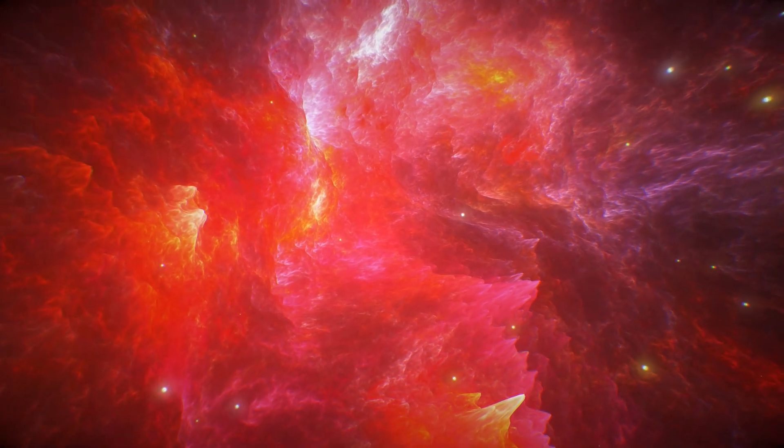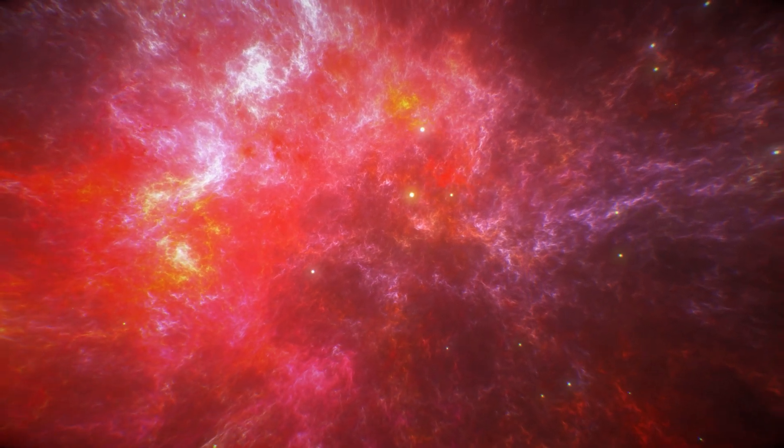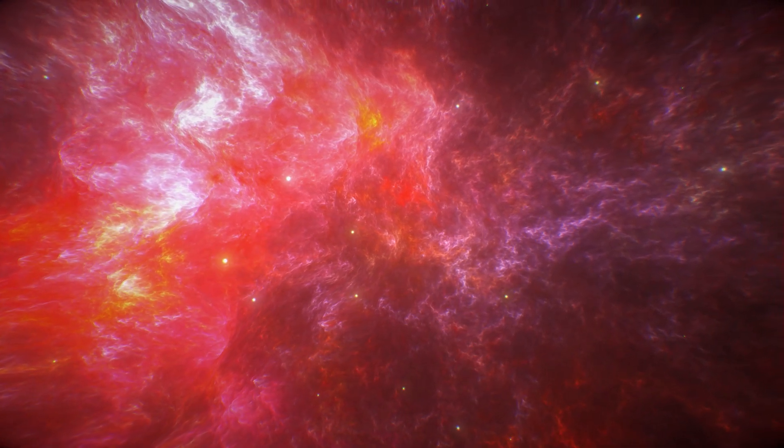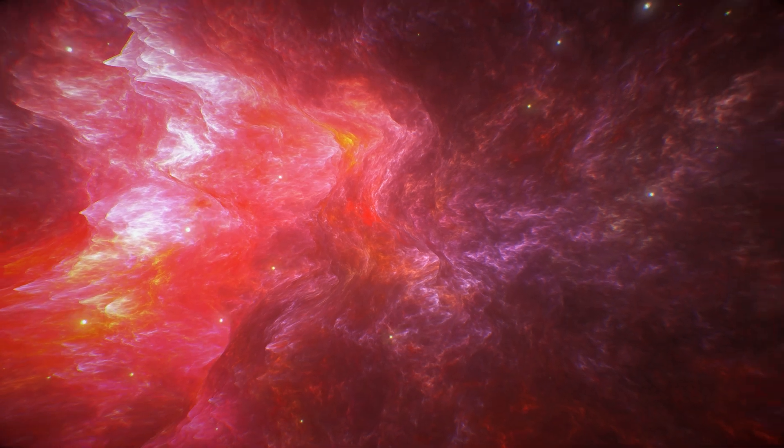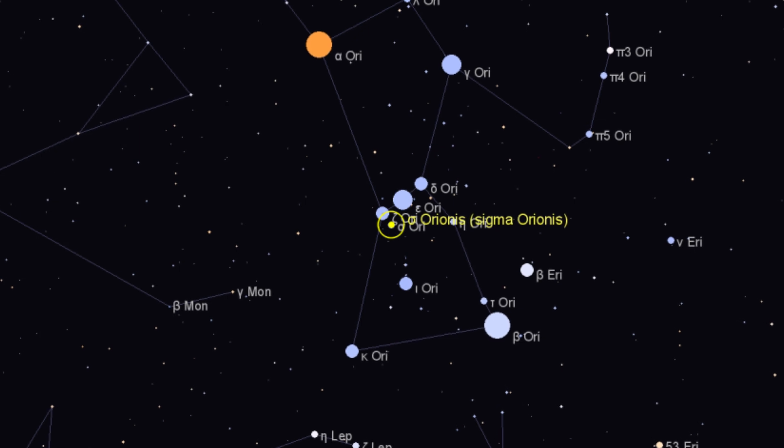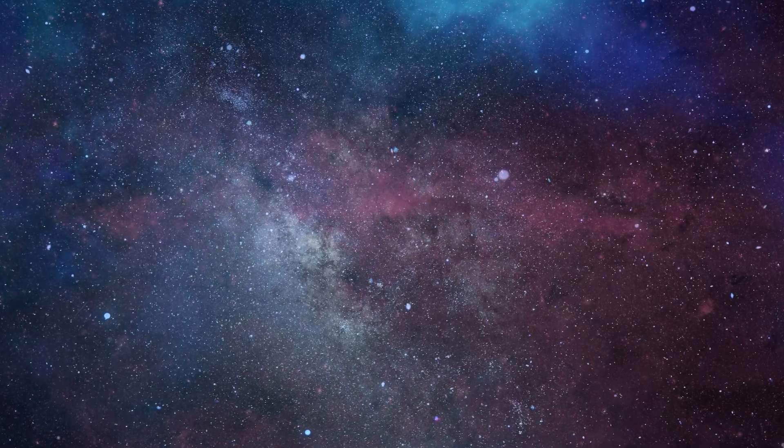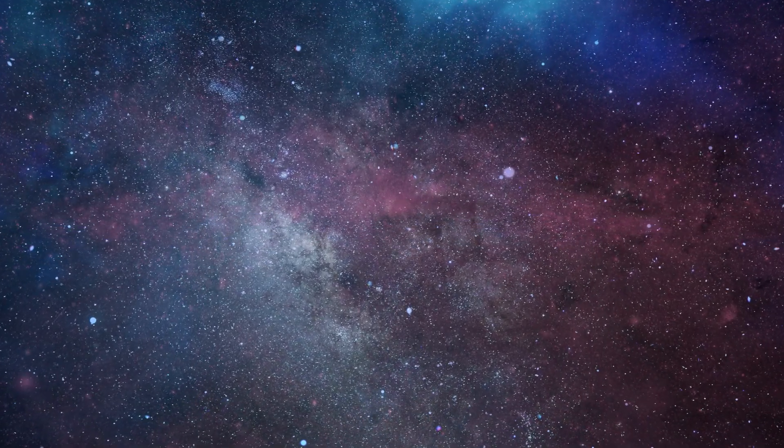The telescope's imaging prowess is further showcased in the stunning capture of the Horsehead Nebula, approximately 1,375 light-years away. The nebula's iconic shape, influenced by the nearby star Sigma Orionis, reveals a dynamic interplay of light and shadow. This striking imagery aids in understanding star formation processes within the nebula.